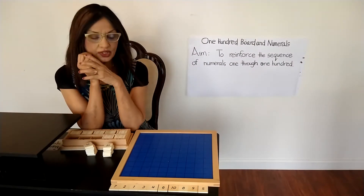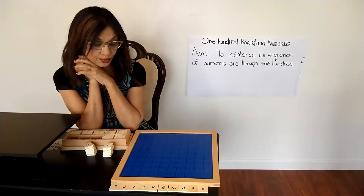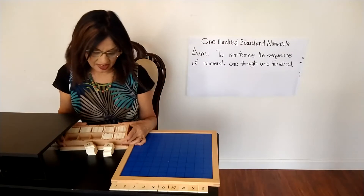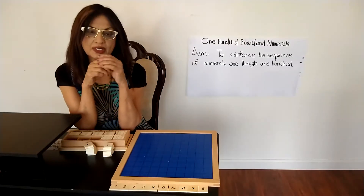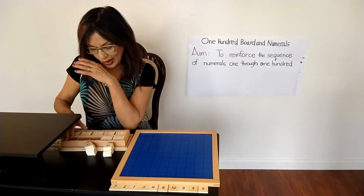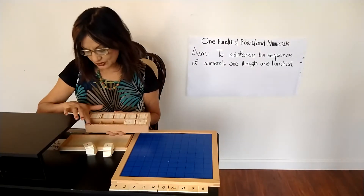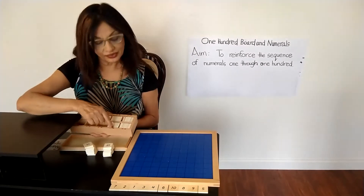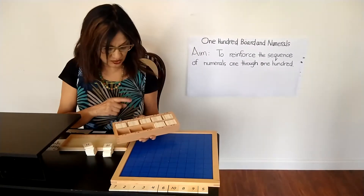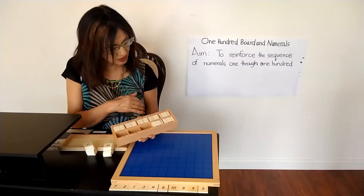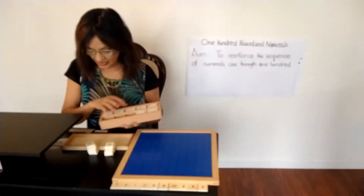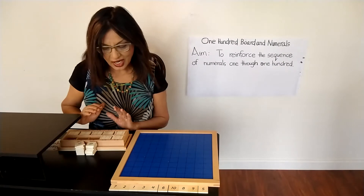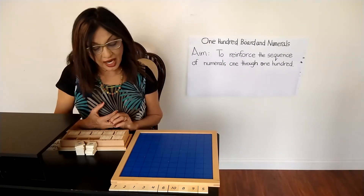Hi everyone, today I'm going to give a lesson on the 100 board. Here is the 100 board, and here in this box I have small squares with numerals printed 1 through 100. In this box the numerals go from 1 to 10, 11 to 20, 21 to 30, 31 to 40, 41 to 50, 51 to 60, 61 to 70, 71 to 80, 81 to 90, and 91 to 100. I already took them out so it's easy for me to show you.